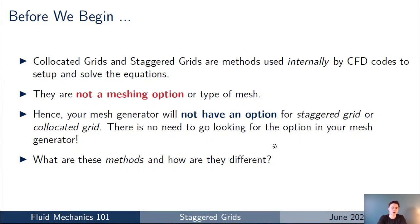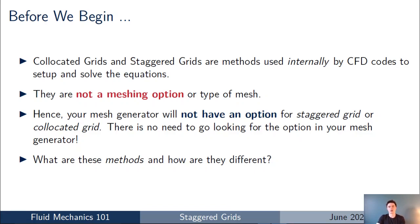Before jumping into today's talk, I want to do a quick bit of signposting. I'm going to be talking a lot about co-located grids and staggered grids. These are methods used internally by the CFD code to set up and solve the Navier-Stokes equations — this is not a meshing option. Don't be confused and think this is a type of mesh or grid you need to make in your meshing software.